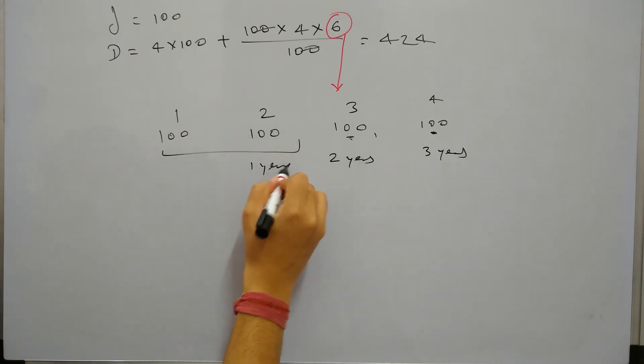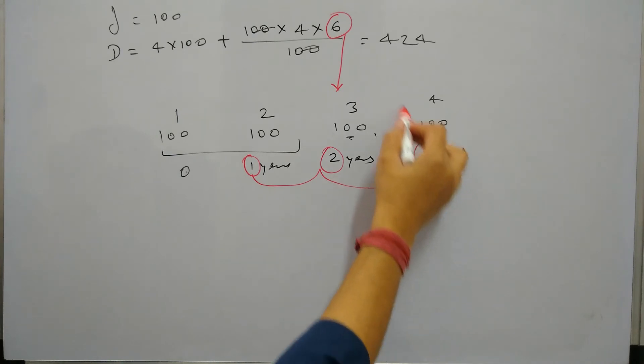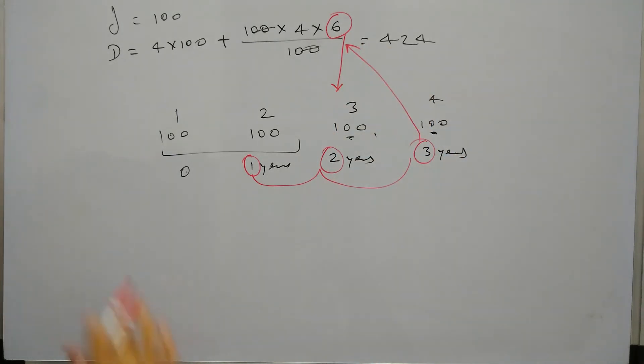Similarly here it will be charged for 1 year and here it will be 0. So in total if you see, on every 100 rupees it was charged for 1 year, 2 years, and 3 years. So if you sum up all this we get 6.